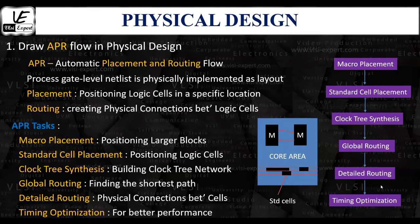The next stage in the APR flow is detailed routing, where actual metal layers are used to connect all components inside the chip layout based on information derived during the global routing and track assignment stages.